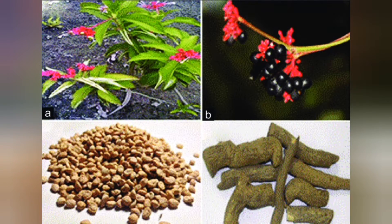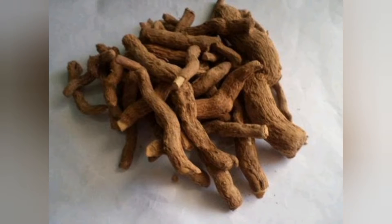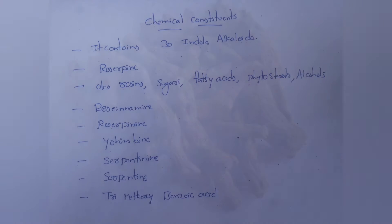Morphology: Color — root bark is greenish yellow to brown color, root wood is pale yellow color. Odor: there is no odor. Taste: it has a bitter taste. Size: 10 to 18 centimeters long. Diameter: 1 to 3 centimeters. Shape: small pieces show cylindrical in shape, tapering and occasionally branched.